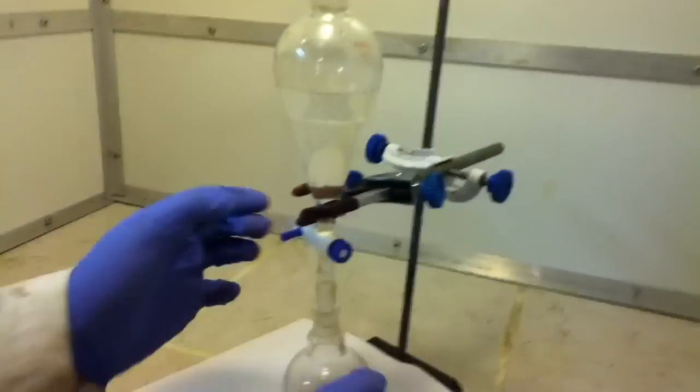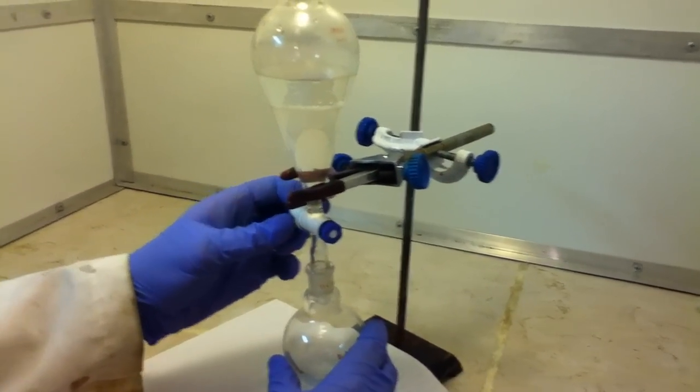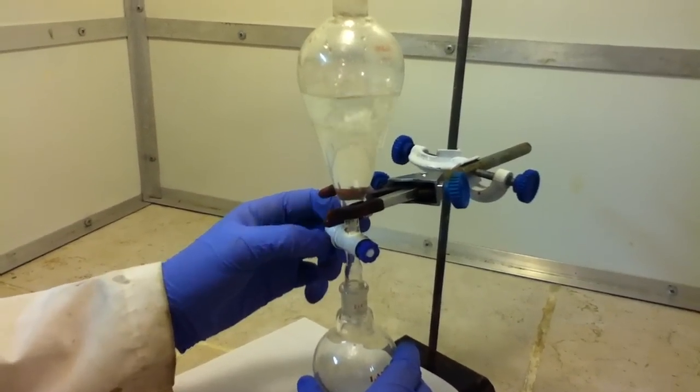Pour the remaining liquid into a separatory funnel. Then, cut off the bottom layer of the liquid. This is the chloroform.